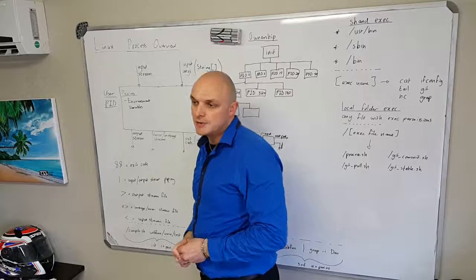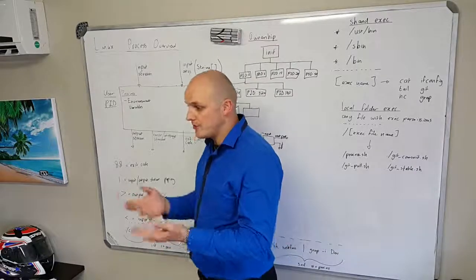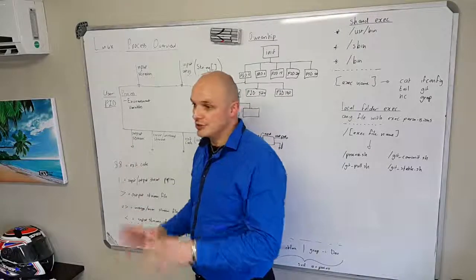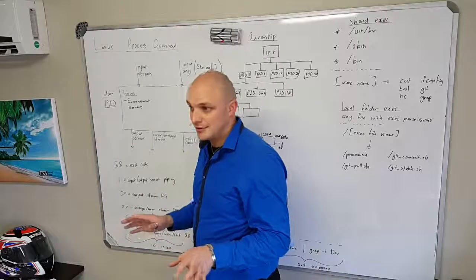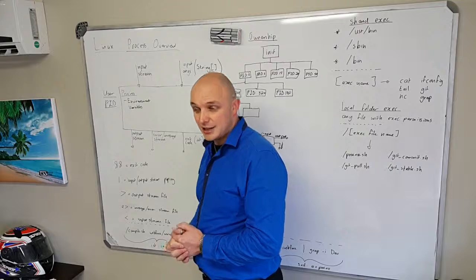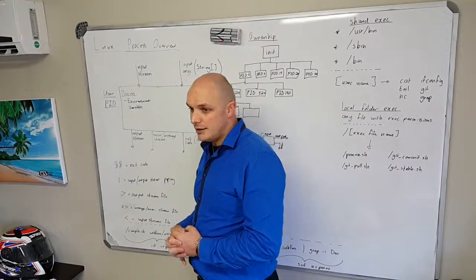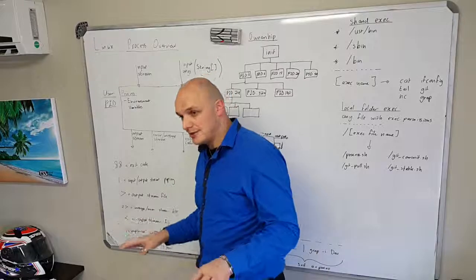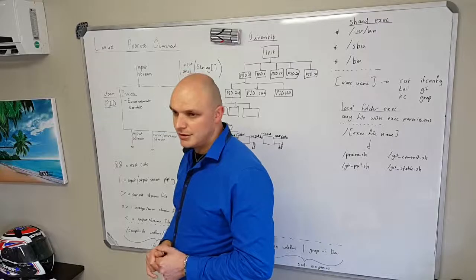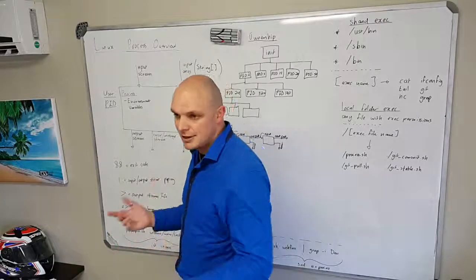Inside the process there are environment variables — a lot of variables specific to this process. They're not like Java variables where you have a variable X with a type and scope. These are process-level environment variables, and they can only take strings as far as I know. There's no other type. Some arithmetic operations on strings may do automatic int conversion, but fundamentally it's just strings.